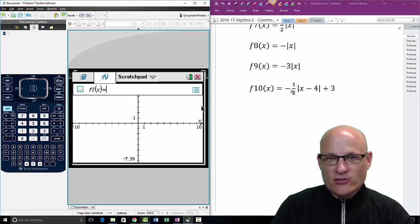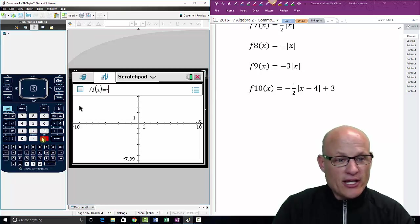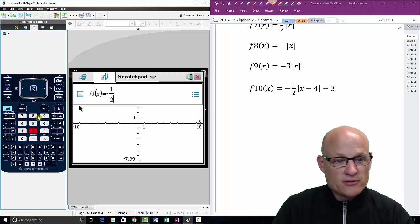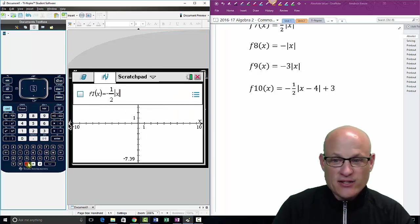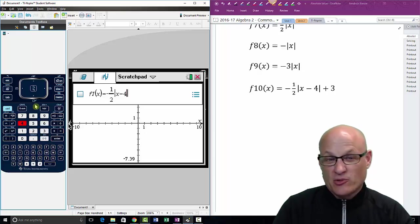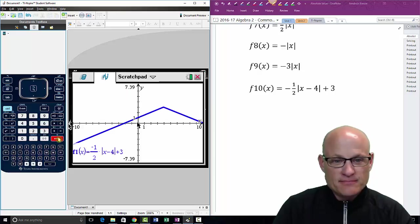It's going to be a reflection because it's negative. It's going to be wider because we got the half. Plus four, or excuse me, minus four means we're moving to the right four and up three. So negative control division one-half, that means it's going to come down, absolute value of X minus four. Minus four means it's moving to the right four, and then plus three.